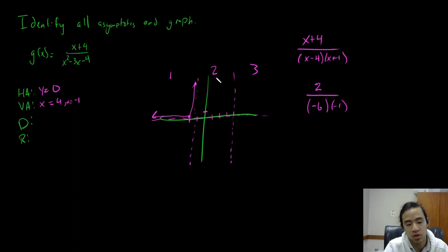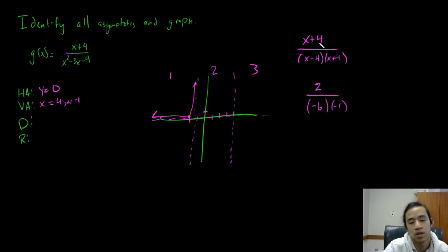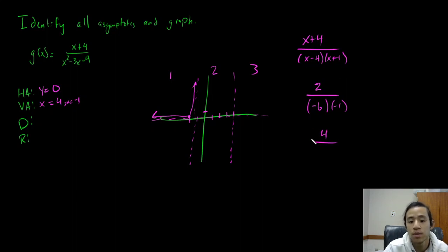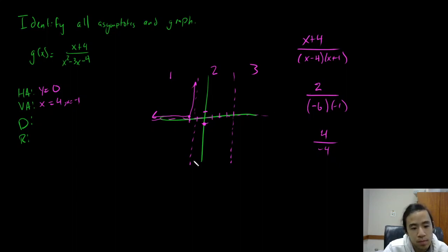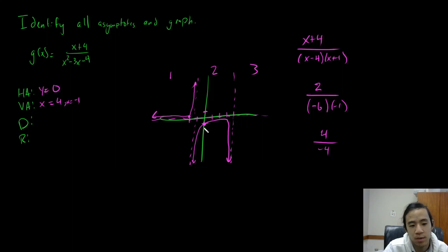Now we're going to choose a point in the middle, so let's pick x equals 0. We get 0 plus 4, which is 4, over negative 4 times 1, which is negative 4. So we get the point (0, negative 1). We'll have something like this — see how I'm following the asymptotes, going through my point but following the asymptotes.